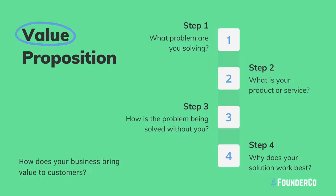Step three: how is the problem being solved without you? Take a little more time with this step because it's the crucial part of the value proposition — how big of a hurdle is it right now for your potential customer base? Is it something they can solve really easily without you, or is this something they can't even solve at all? This is a really good measuring stick for how great your value is. If they're solving it really easily, that puts up a red flag. But if it's a really big problem they can't solve right now, that's a great way of knowing you're actually creating value.